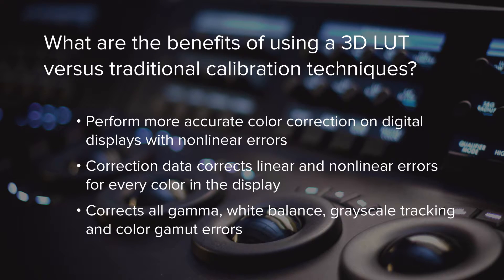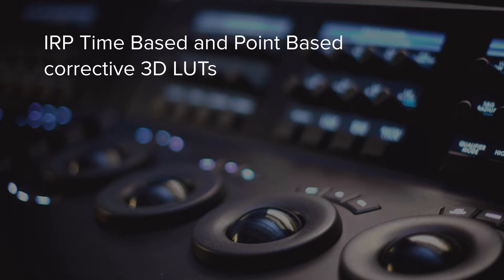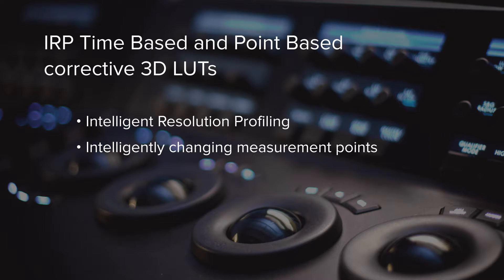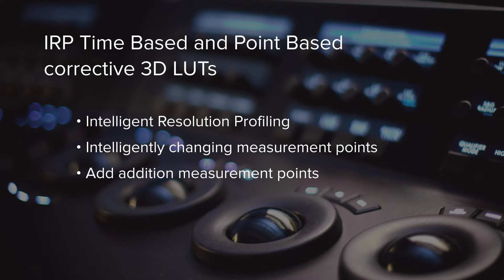IRP stands for Intelligent Resolution Profiling, where we intelligently change how many measurement points inside the color space we use to create the 3D LUT, versus the traditional method of measuring a fixed grid of points. In nonlinear areas of a color space volume, we can add additional measurement points clustered around those nonlinear areas in order to give us more data to make a more accurate LUT.